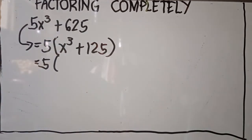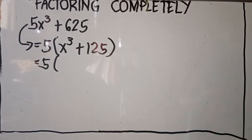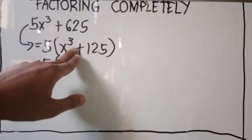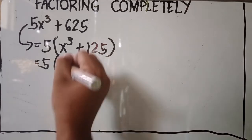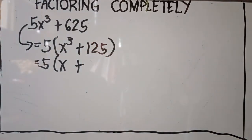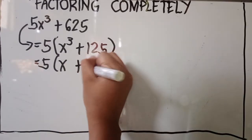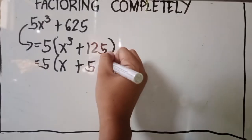For sum of two cubes, there must be two factors. The first factor contains the cube roots of each term. The cube root of x³ — you simply divide the exponent by 3 — that's x. The cube root of 125: you find a number that when multiplied by itself three times gives 125, and that's 5, because 5 × 5 = 25, and 25 × 5 = 125.